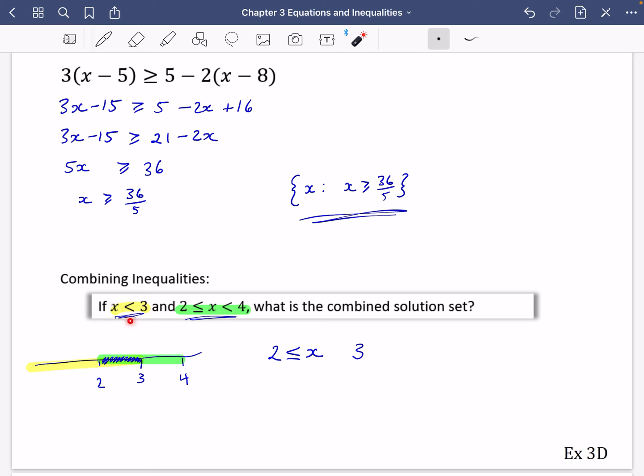Well, no, it's not allowed to equal to three because it says it has to be less than three. So it looks like the combined region that will make both of those true is it has to be bigger than or equal to two and less than three. So the combined solution set will be X such that X is in between two and three.